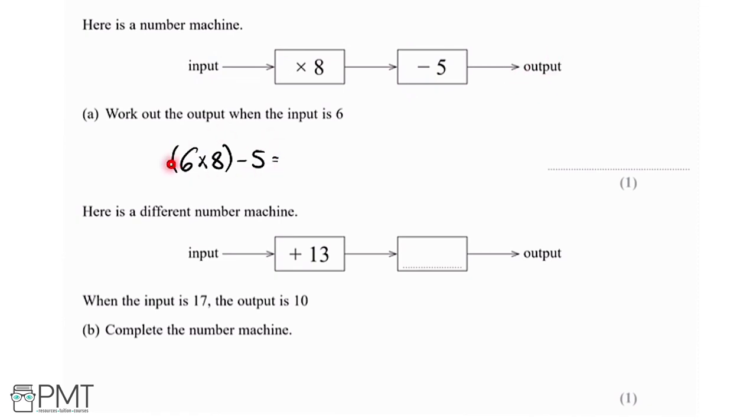So we can either pop all of this into the calculator or we can do it step by step. So we've got 6 times 8, which is 48, and then we're subtracting 5 from that, which gives us 43, which is the answer to part A for one mark.